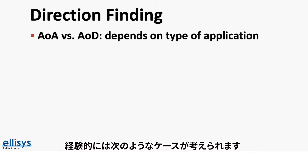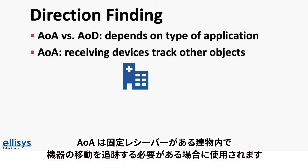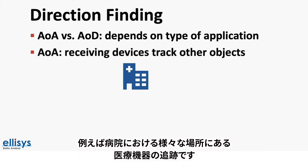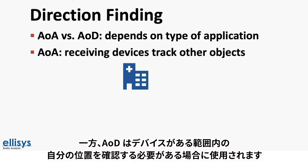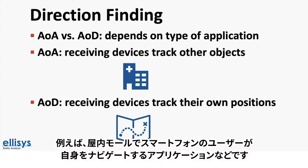You can think of the following as a rule of thumb. Angle of arrival is used when you have fixed receivers that need to track other moving devices, such as in a hospital where we need to track where different health devices and equipment are located within the building. Angle of departure, on the other hand, is used in cases where devices need to track their own positions within the system, such as in an application where the user is navigating an indoor mall using their smartphone.